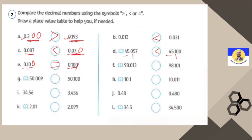Letter F: 98 is the same as 98. After decimal, here starts with 0 and here starts with 1 — so 1 is the greatest. Letter G: 50 and 50. After decimal, here starts with 0 and here it's 1 — so 1 is greater than 0. Letter H: 10 and 10. After decimal, here starts with 1 and here it's 0 — so 1 is the greatest.